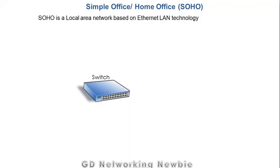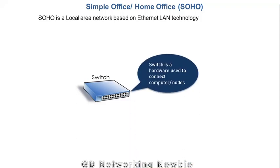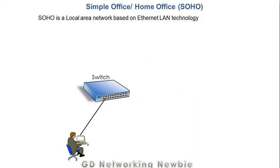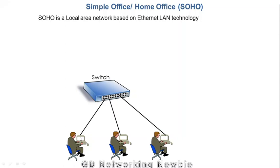Now to establish a local area network we have a switch, and a switch is a hardware that is used to connect computers or nodes together. This first user is connected by using a port — this is an interface — and then other users are connected similarly. There are also other resources like printers, so we are connecting printers with this network as well. All these users and printers are connected with the help of a switch, making a local area network.